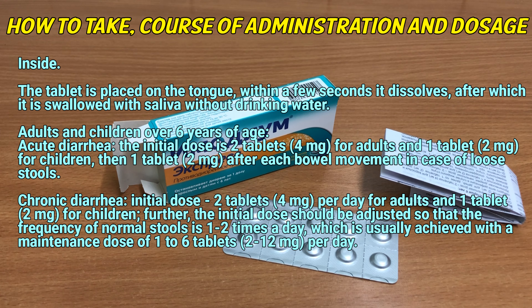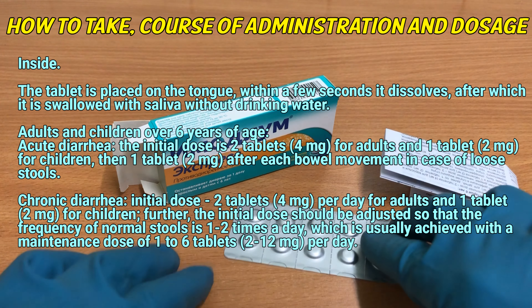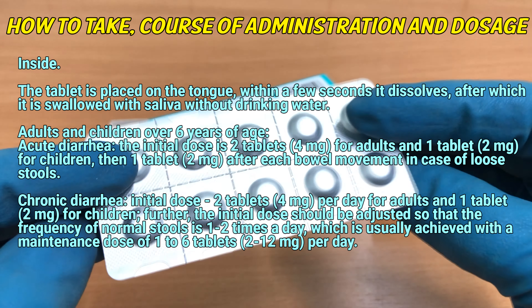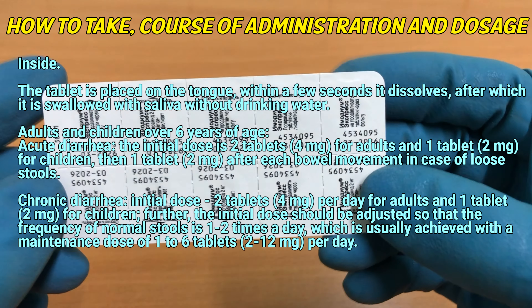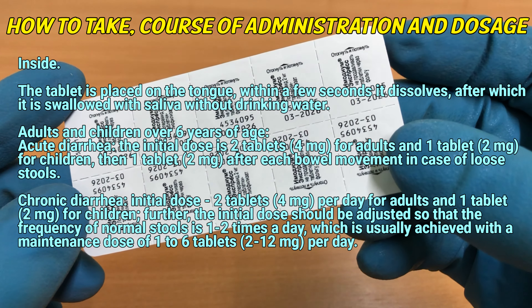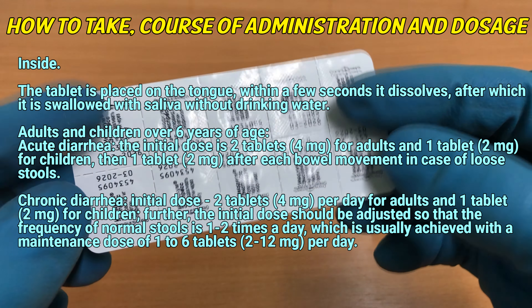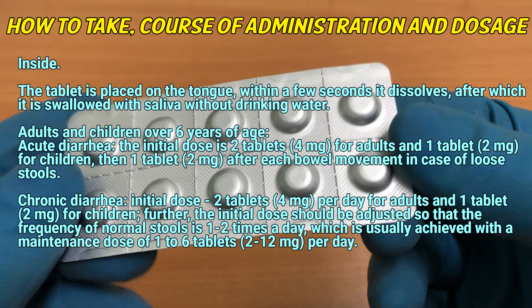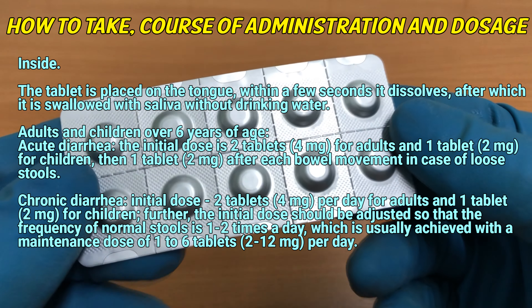Acute diarrhea: the initial dose is 2 tablets (4 mg) for adults and 1 tablet (2 mg) for children, then 1 tablet (2 mg) after each bowel movement in case of loose stools.